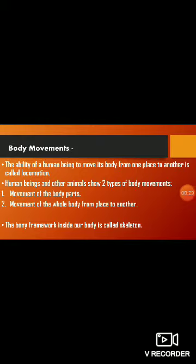The ability of a human being to move its body from one place to another is called locomotion. Human beings and other animals show two types of body movements: movement of a body part, and movement of the whole body from one place to another place. The body framework inside our body is called a skeleton.